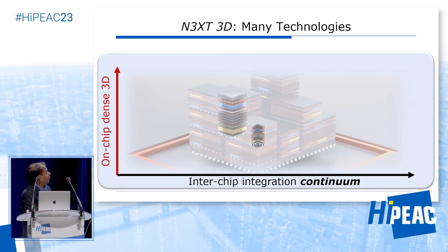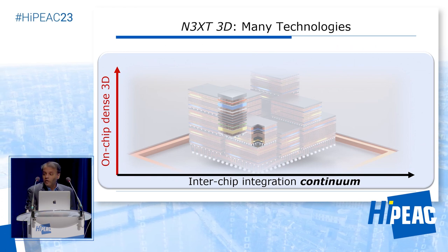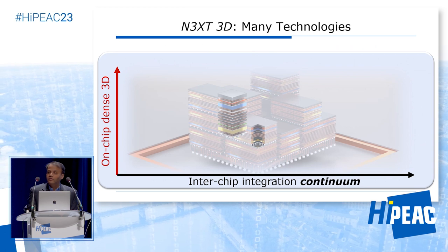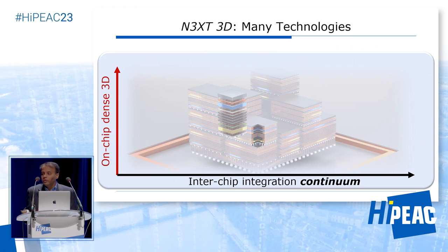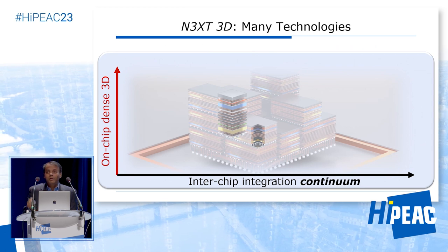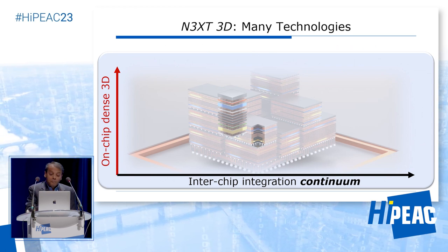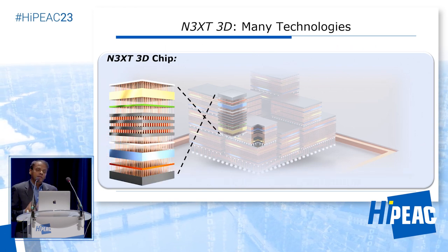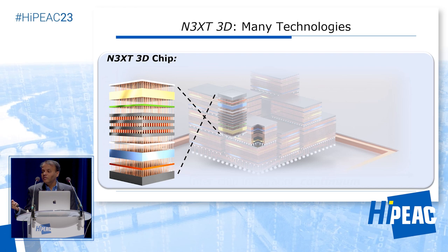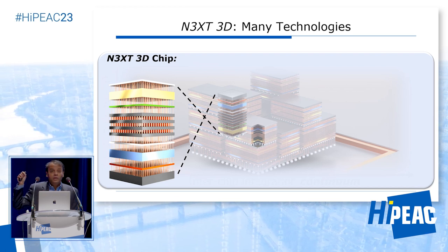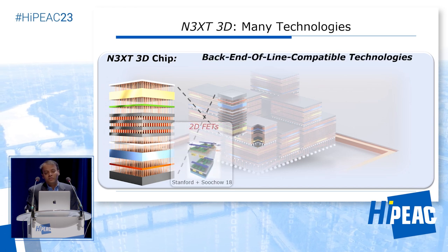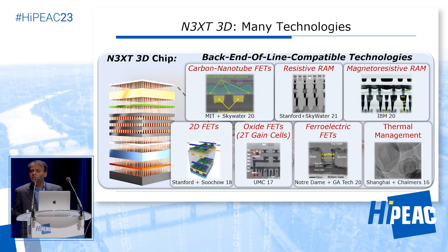Let's delve into the details of this y-axis — on-chip dense 3D. If you got a bunch of technologists in the room and asked them which technologies to use to implement NEXT 3D, the only answer everybody would agree on is 'my technology.' But the key point is that when you actually create a new architecture or a new system concept, you want to make sure it works for many possible technologies being explored today. And the good news is that with this NEXT 3D concept, there are many technologies — you pick your choice. For logic technologies, I love carbon nanotubes, but if you like 2D semiconductors, you can implement NEXT 3D. Similarly, for memory technologies I like resistive RAM, but if you like magnetic RAM, oxide memory, and so on, you can implement this NEXT 3D concept.